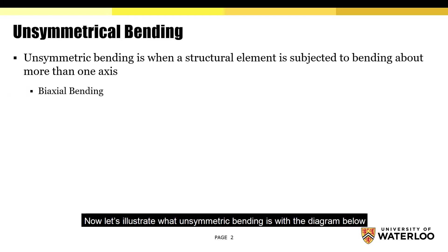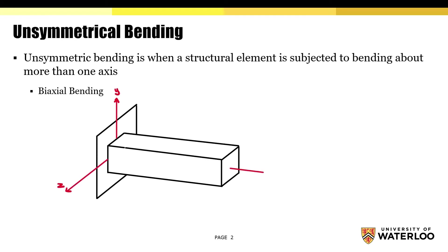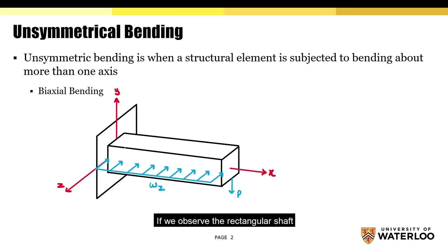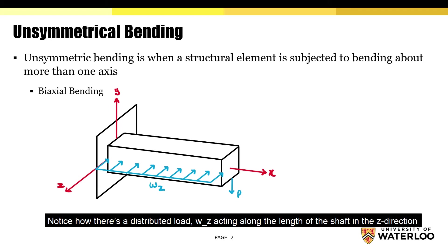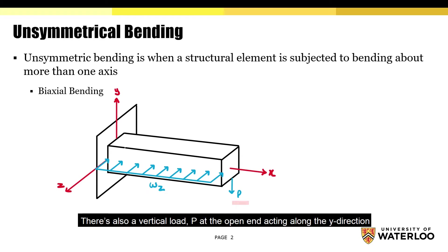Now let's illustrate what unsymmetric bending is with the diagram below. If you observe the rectangular shaft, notice how there's a distributed load wz acting along the length of the shaft in the z direction. There's also a vertical load P at the open end acting along the y direction.